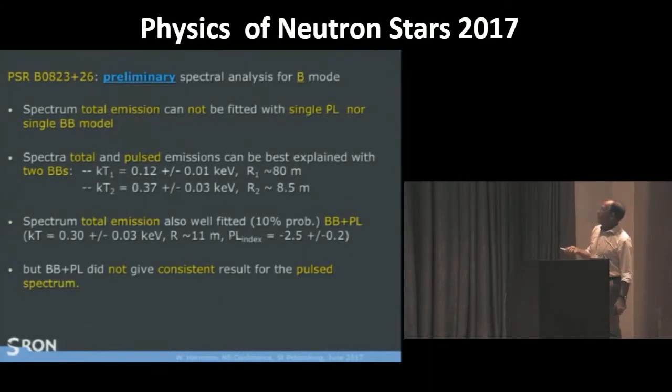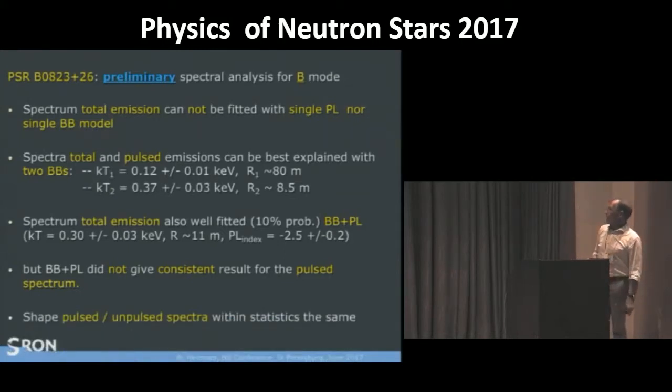As I could say now already, and it's particularly important for the interpretation, because you get a completely different discussion. These numbers are exactly the same as we found for 0943. So, that would be exciting if that is the case, but it would also be exciting if that is the final fit. And the shape of the pulsed and unpulsed spectra are within statistics the same. It's clear with this large pulsed fraction, that the number of counts in the unpulsed emission is low.